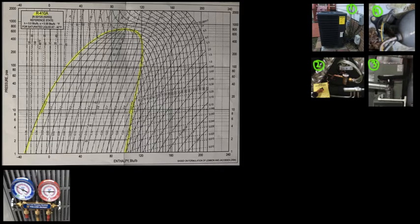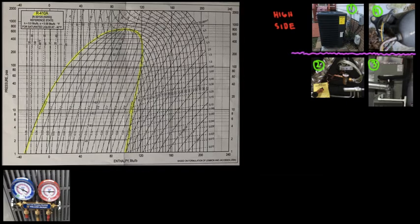We're going to draw a line dividing the system and use a red color for the high side. Why is it called the high side? Because it's high pressure — the compressor makes sure of that. And why is it red? Because that's the convention we use with the gauges. When you connect the gauges to the condenser, you have a red color, which means high pressure and therefore high temperature.